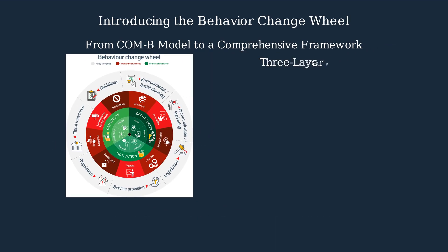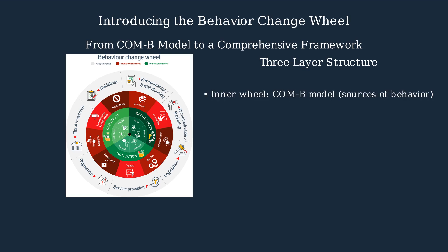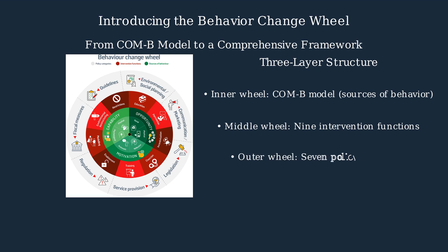The behavior change wheel consists of three concentric layers. At its core is the COM-B model, representing the sources of behavior. The middle wheel contains nine intervention functions that can be used to address the behavior components. The outer wheel presents seven policy categories that support and enable these interventions.